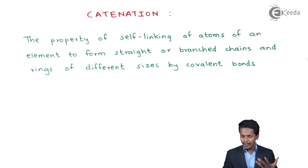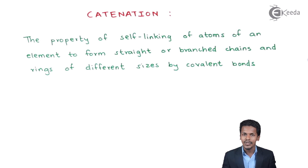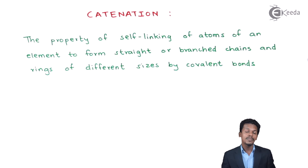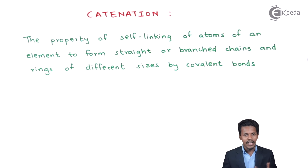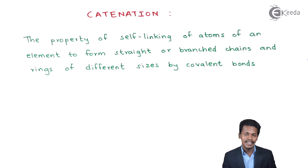So why is carbon responsible for showing the property of catenation? It is because of bond enthalpy. If you consider the bond enthalpy of carbon-carbon and compare it with other elements belonging to group 14, the reason becomes clear.